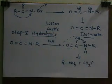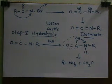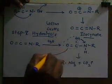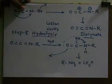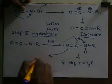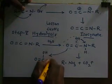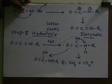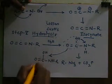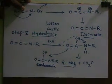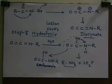This is the Hofmann rearrangement. This step can be explained in more detail: in some books there is formation of carbamic acid — RC(=O)(OH)NH2 — as an intermediate, and this carbamic acid then loses carbon dioxide to give RNH2. That is Hofmann rearrangement.